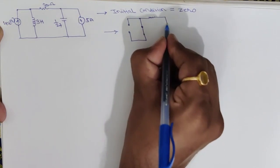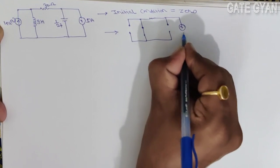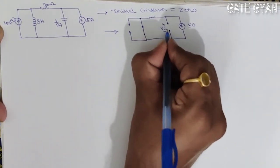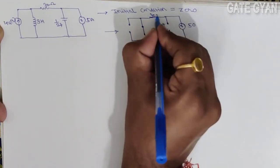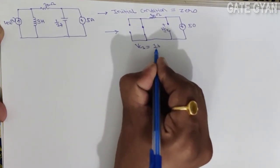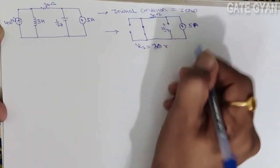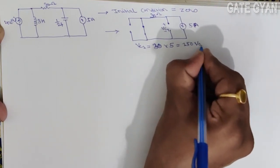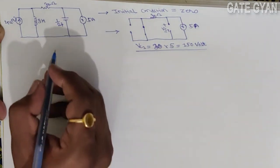For the DC current source, the inductor will be a short circuit and the capacitor will be an open circuit. So my circuit will look like this with just the 30 ohm resistor. VC1 equals 30 ohm times 5 ampere, which gives VC1 = 150 volts.